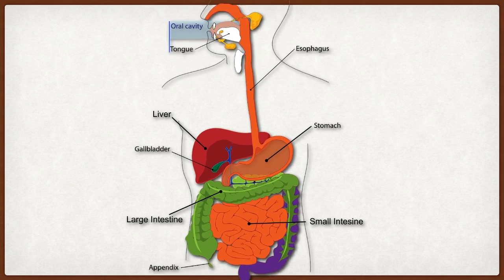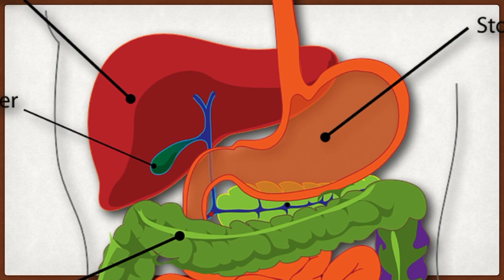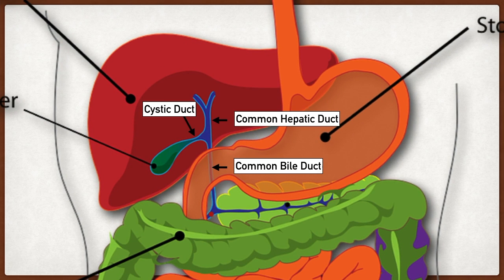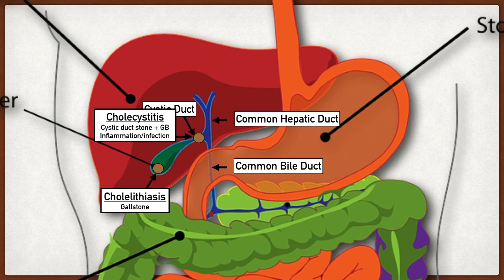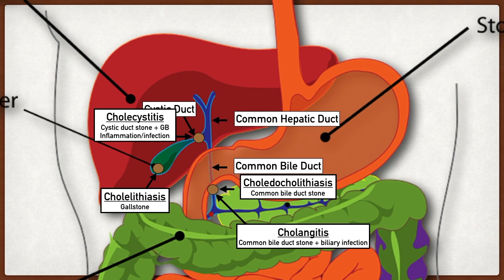Here's what these four diseases look like on the original model, with the cystic duct, common hepatic duct, and common bile duct shown. Cholelithiasis is gallstones within the gallbladder. Cholecystitis is a stone obstructing the cystic duct, leading to inflammation of the gallbladder. Choledocholithiasis is a gallstone in the common bile duct. Cholangitis is obstruction of the common bile duct that leads to inflammation of the biliary tree, liver, and/or gallbladder.